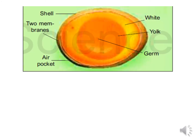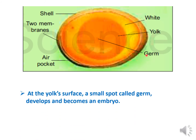An egg is made up of a shell, two membranes, an air pocket where air enters and allows the embryo to breathe, the white, the yolk, and the germ. The ovum and the sperm unite to form a germ at the surface of the yolk.